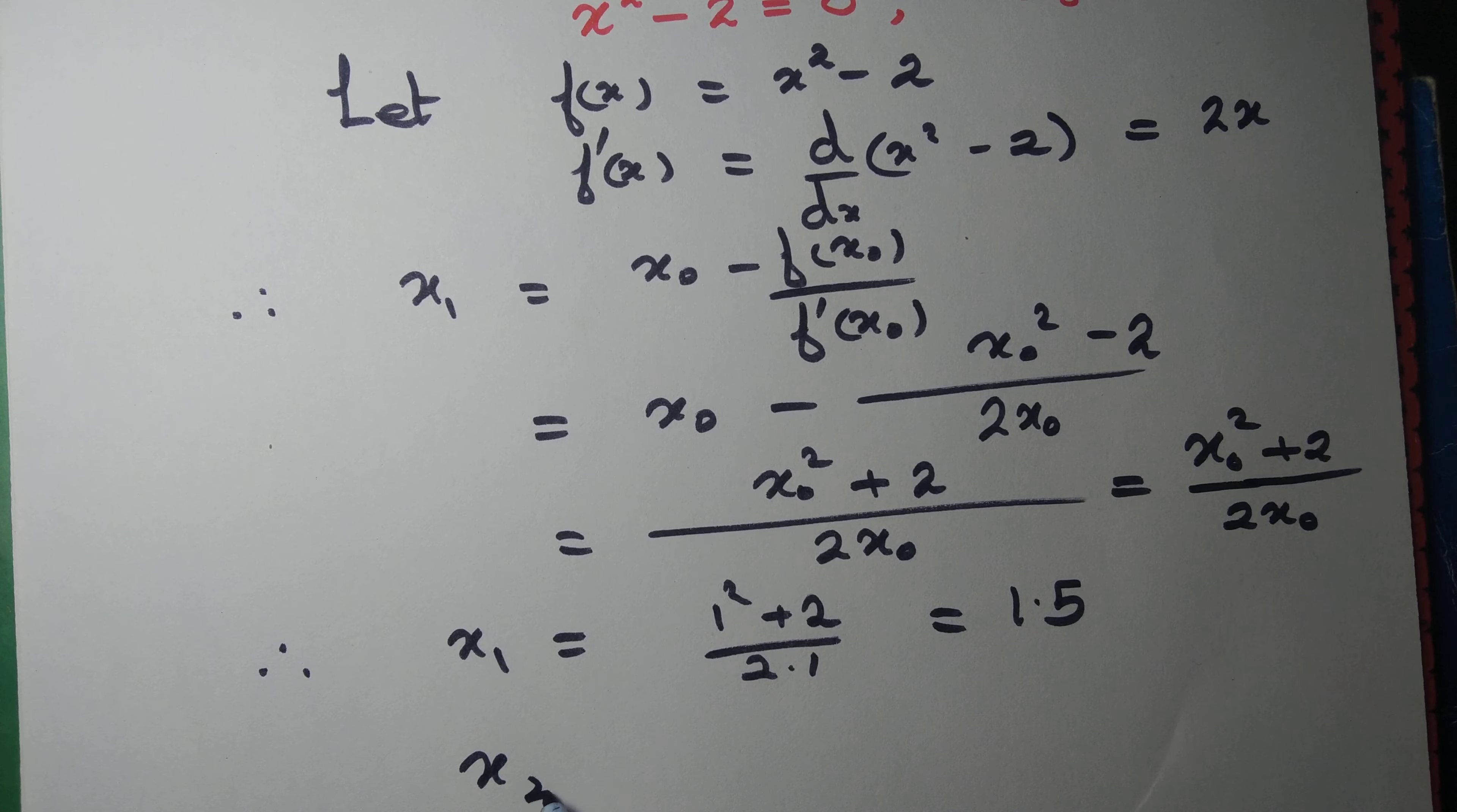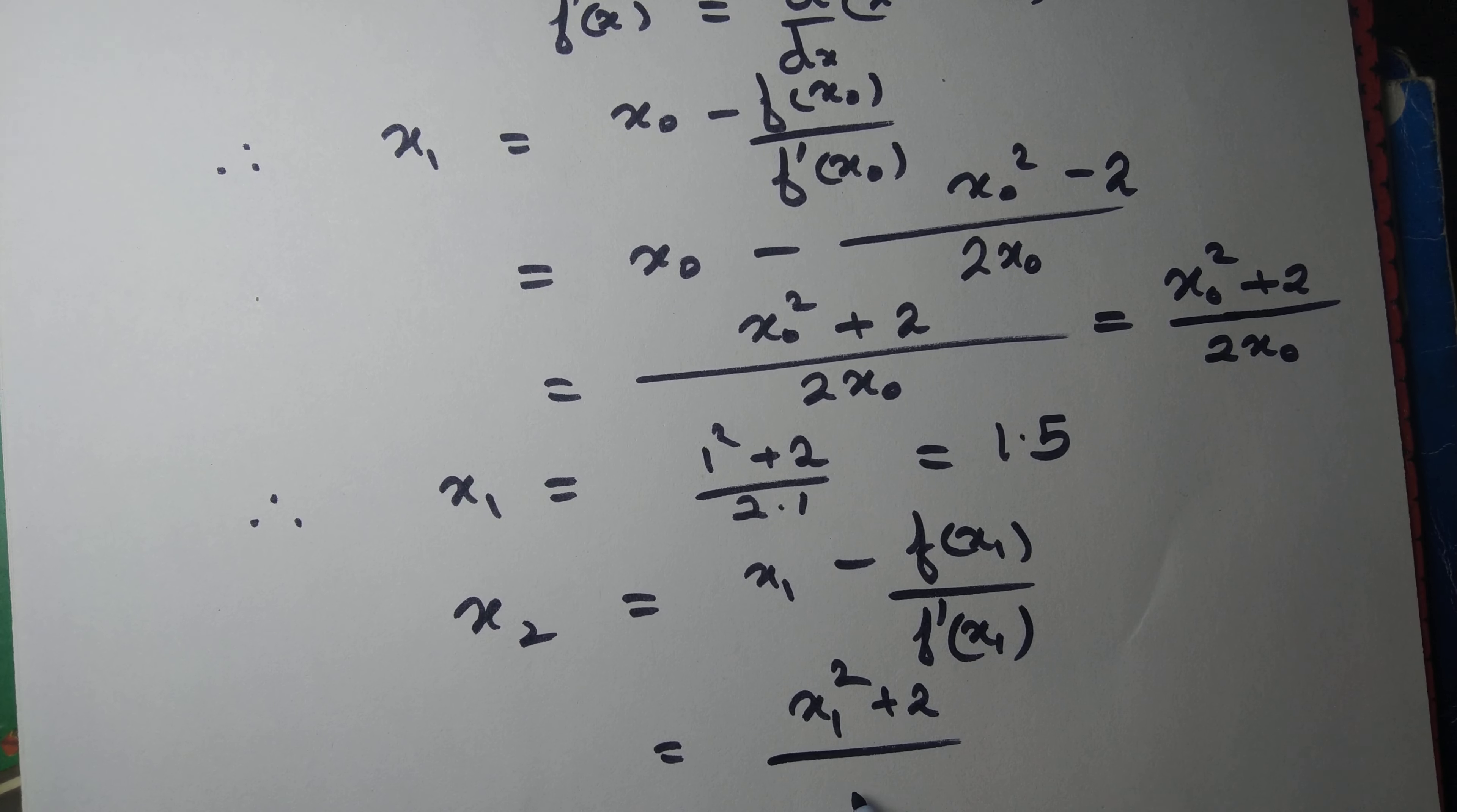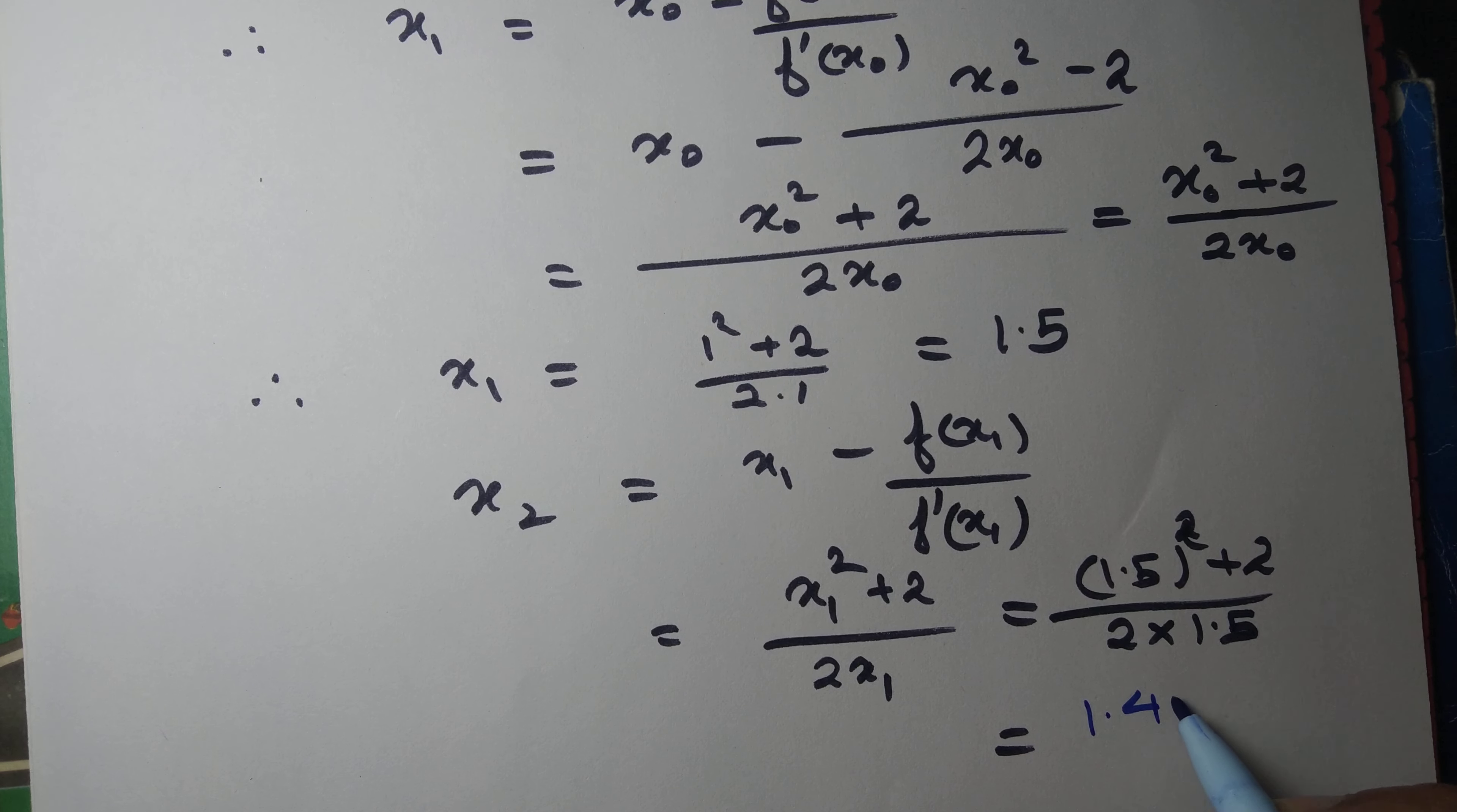Again, x₂ equals x₁ minus f(x₁) divided by f'(x₁), which upon simplifying gives us (x₁² + 2)/(2x₁). That equals (1.5² + 2)/(2 × 1.5), which upon simplification gives us 1.416.